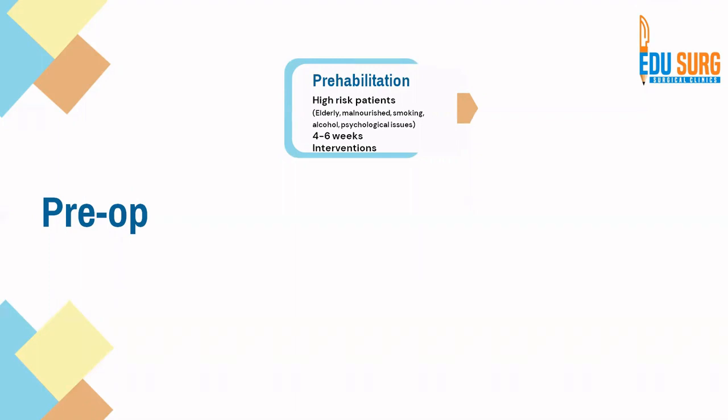The guidelines highlight high-risk patients as elderly patients over 65 years of age, malnourished or obese patients, patients on prolonged smoking and alcohol consumption, and patients with psychological issues. All these patients need nutritional optimization, physical optimization, chest physiotherapy, nutritional supplements, and psychological rehabilitation. The duration for pre-habilitation has been quoted as 4 to 6 weeks by the ERAS 2022 guidelines. Interventions can include physiotherapy, nutritional changes, and counseling for smoking and alcohol de-addiction.